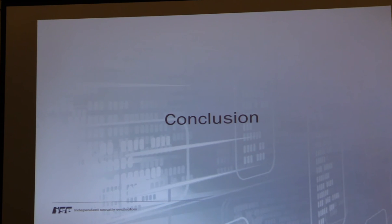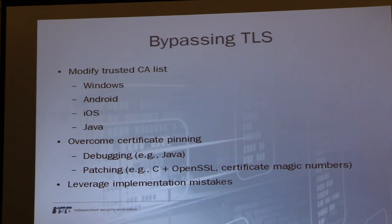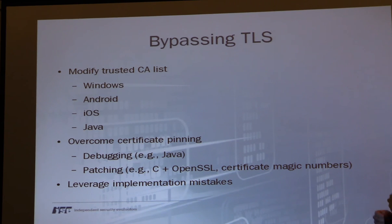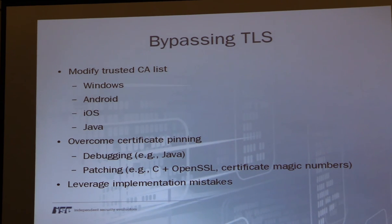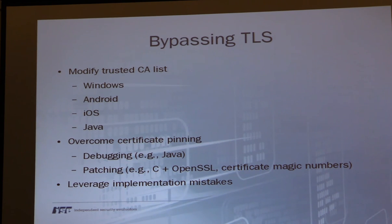To wrap up: the main technique for bypassing TLS is to modify the list of trusted CAs — I've shown four platforms, and the same principles apply to anything, including embedded Linux and BusyBox devices if you can gain shell access. Failing that, certificate pinning is the most common obstacle, and patching or debugging are the ways to address it. You might also have source code access in a white-box assessment. And finally, implementation mistakes or misconfigurations may let you bypass TLS without any of these steps.